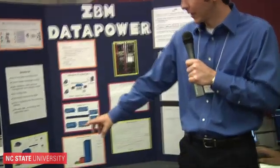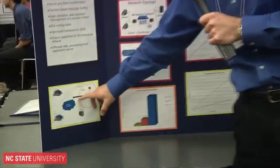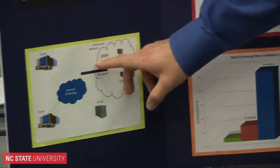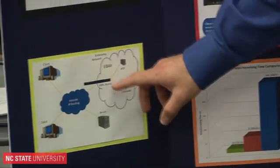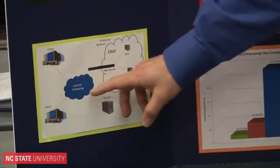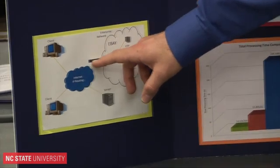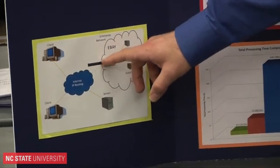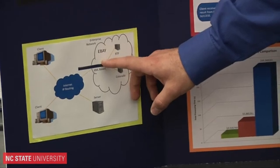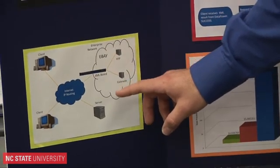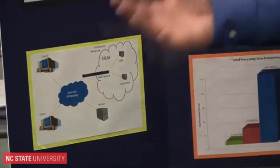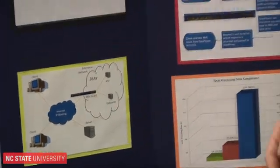The IBM DataPower appliance is focused for an enterprise network. Most people are familiar with a typical IP network, but this was made for a front end for an enterprise network — say, for example, a company like eBay. They will use DataPower for specific functions that I'll explain.